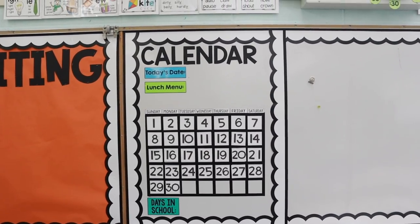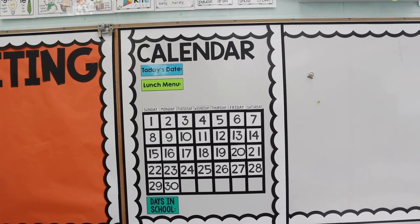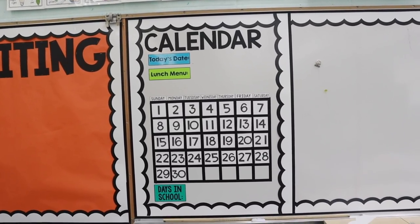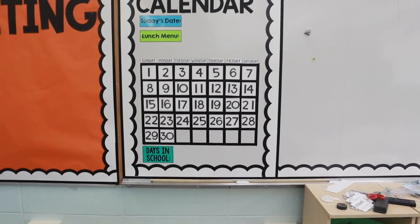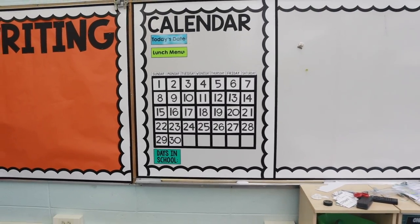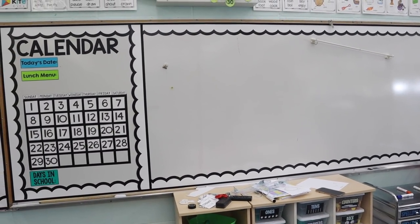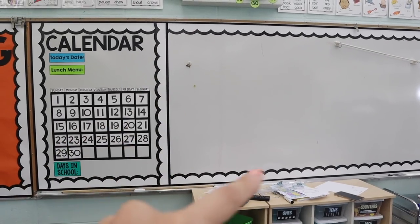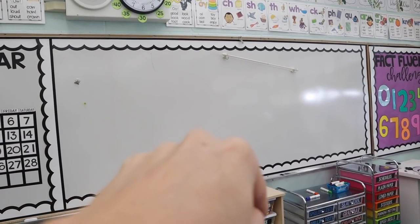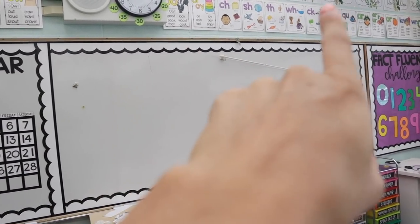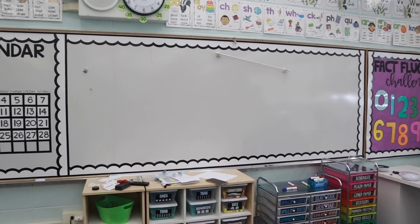It's really easy for the kids to read and access. We have the date, the lunch menu, and then how many days we're in school. I'm going to use coins to count days of school. Right next to it over here we're going to do our schedule, another anchor chart space, and then second graders versus Mrs. Coates.